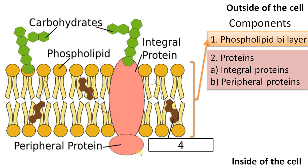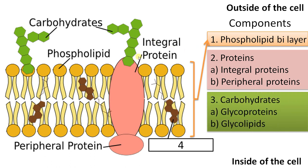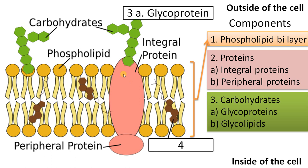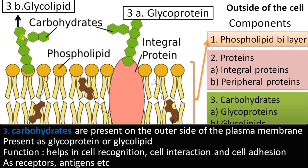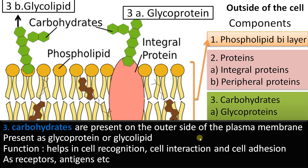The third component is the carbohydrate. Carbohydrates are of two types — you can see this in green color. If this carbohydrate is attached to a protein then it is called a glycoprotein; glyco means glucose or carbohydrate. If it is attached to the phosphatic head group, it is called a glycolipid. Remember, carbohydrates are seen only on the outer side of the cell, or the extracellular side. So there are two types: glycoprotein and glycolipid.